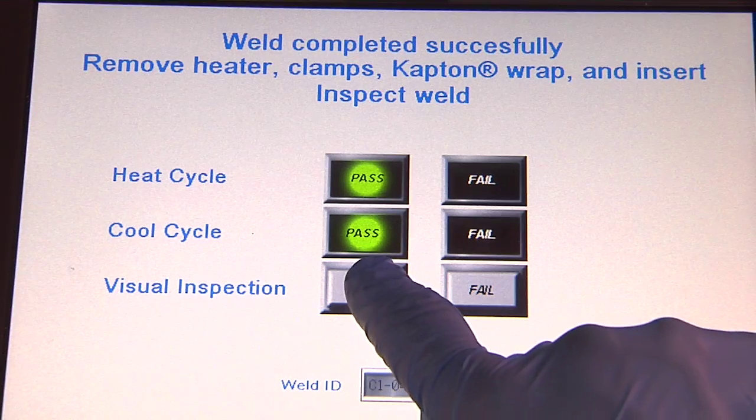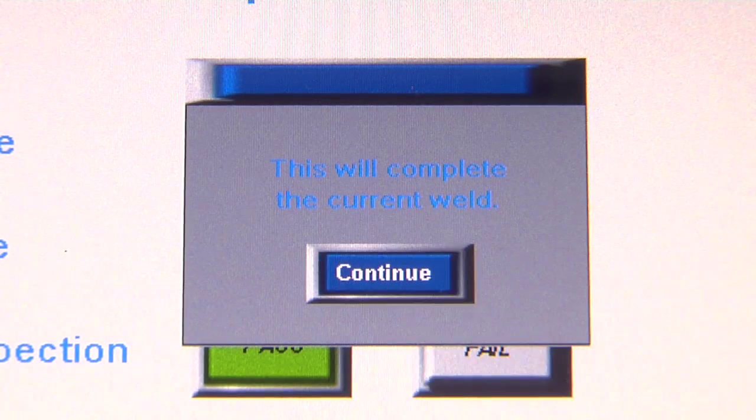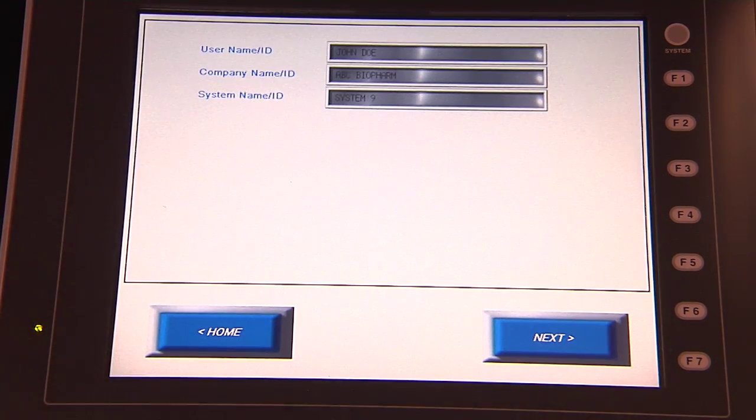Select the disposition of the weld and hit Next. Press Continue to complete the current weld. The Weld-in-Place system is now ready to perform another beadless weld.